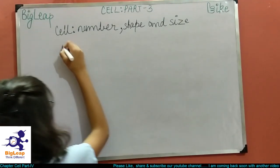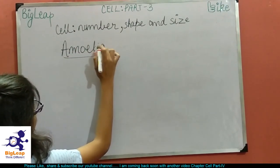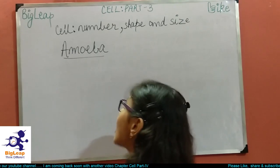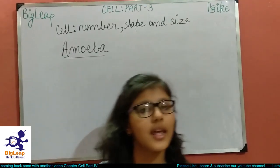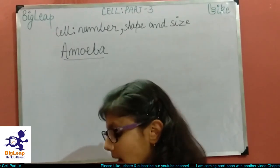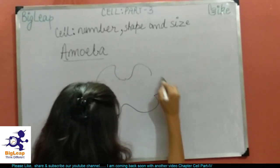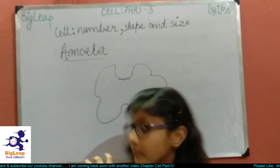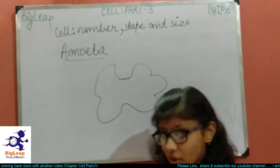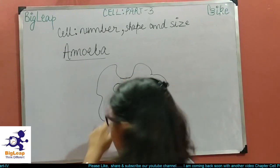Now let's talk about a unicellular organism — amoeba. Amoeba is the most popular unicellular organism; it can do all its activities on its own. It's a full-fledged organism. Amoeba has an irregular shape, like a color drop or a stain. This is all about the structure of amoeba. It consists of a nucleus.